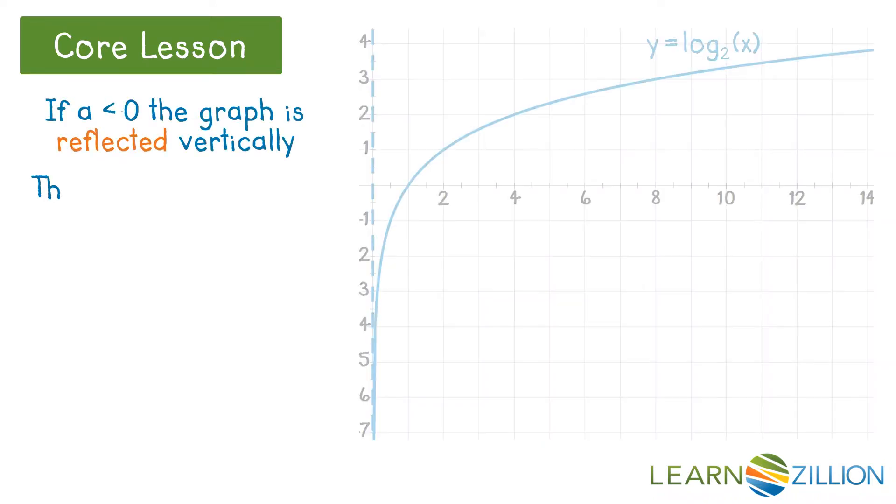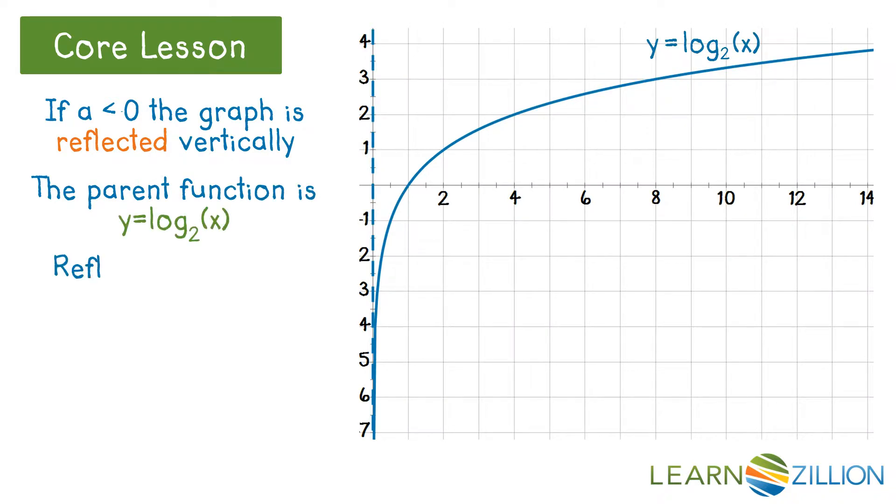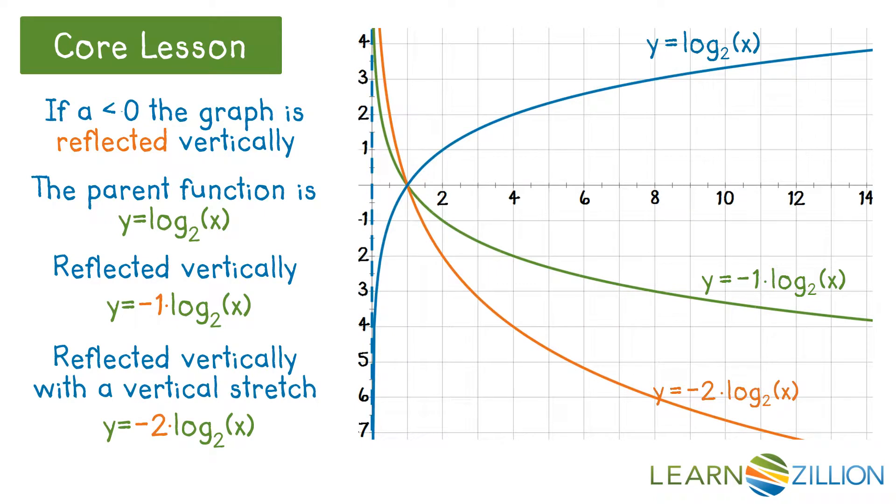Let's see a reflection. We start with the parent function, reflected vertically with a negative 1. This takes each y value of the parent function and makes it opposite. Finally, this graph is reflected with a vertical stretch by a factor of 2.